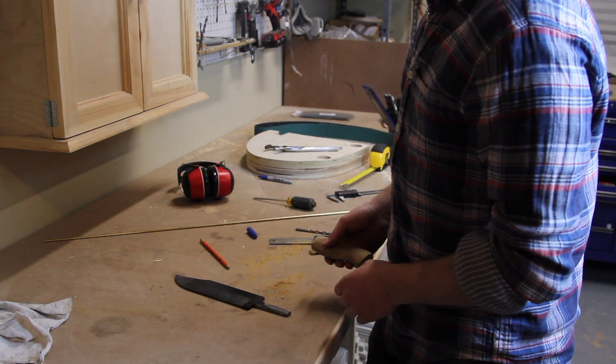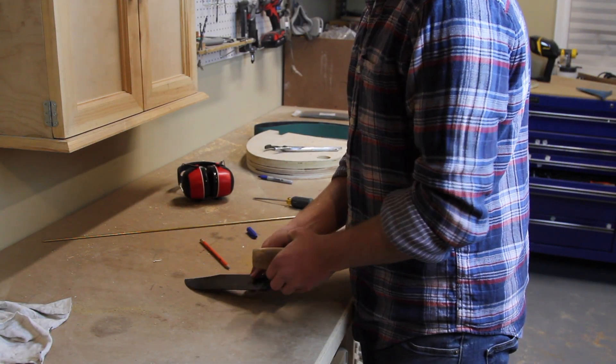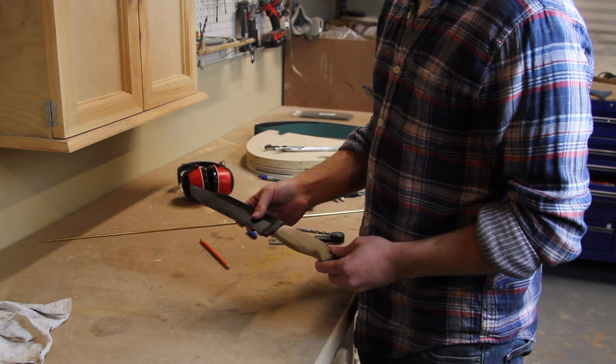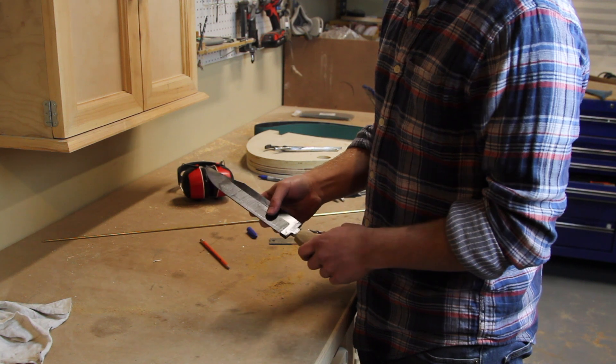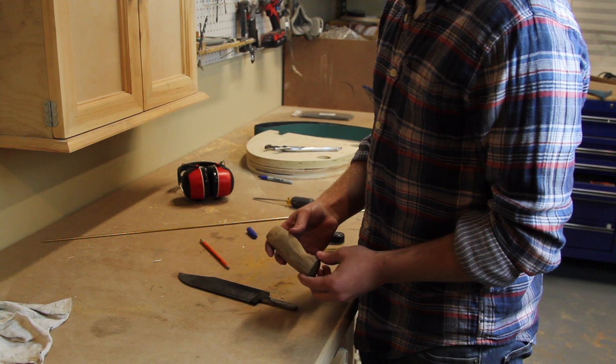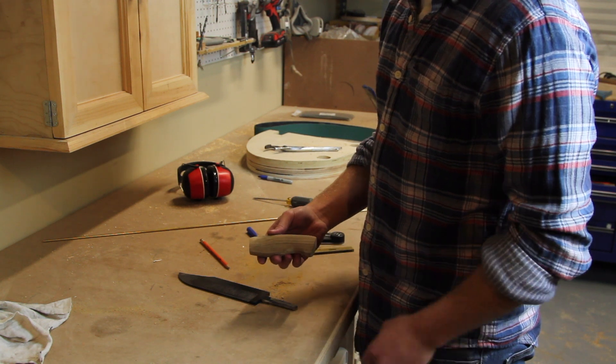Okay, so right now I'm trying to fit the tang into the handle. The handle is pretty much roughed out. It just needs to be sanded to its final shape. It's a really nice Bolivian coffee wood handle. It's going to get nice and dark once I put some boiled linseed oil on it.